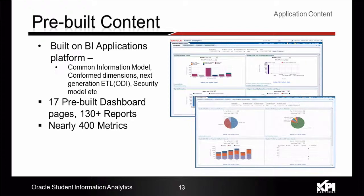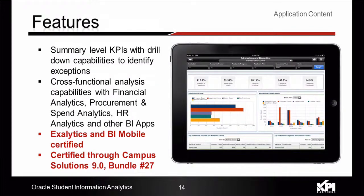This application is fully integrated into the common information model provided by Oracle BI apps. It has conformed dimensions with the rest of the BI apps and integrated security. Pre-built content includes ETL using ODI, more than 17 pre-built dashboard pages, 130 or more reports, and several hundred metrics. The application also supports cross-functional analysis capabilities — for example, you can analyze and tie metrics related to student financials directly to the financial analytics module, like GL and AR. You can also tie course and utilization measures with HR and payroll data to determine department and college-level effectiveness.